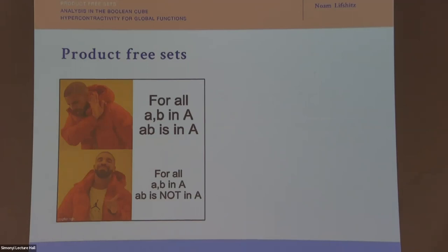Now let's talk about problems in additive combinatorics that will turn out to be related. If you have a finite group, an important question is to study sets closed under multiplication — these are the subgroups. We're going to study the opposite: product-free sets, where if two elements are in the set their product is not.